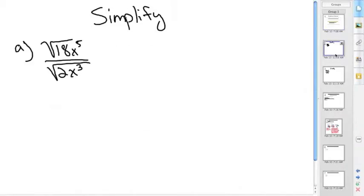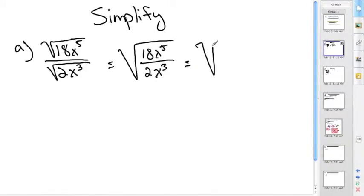Let's go straight forward to the example: square root of 18x to the fifth over square root of 2x to the third, which is the same as saying square root of 18x⁵ over 2x³. 18 divided by 2 is 9. Every time you're dividing and you have the same base with exponents, you subtract: 5 minus 3 is 2. So we have square root of 9x². Next, we take the square root of 9, which is 3, and the square root of x² is x.